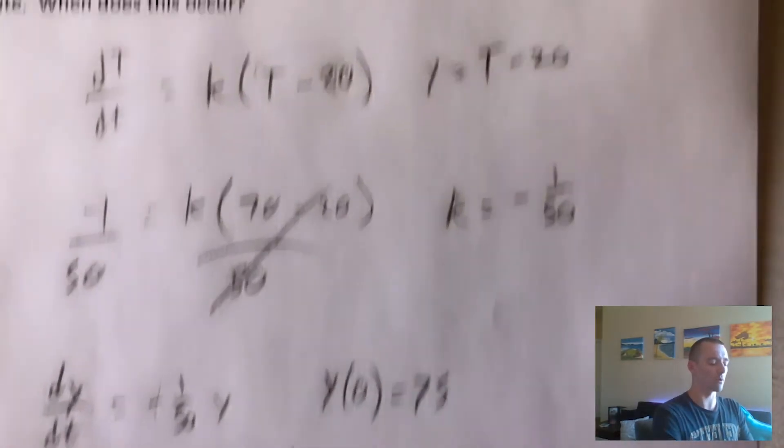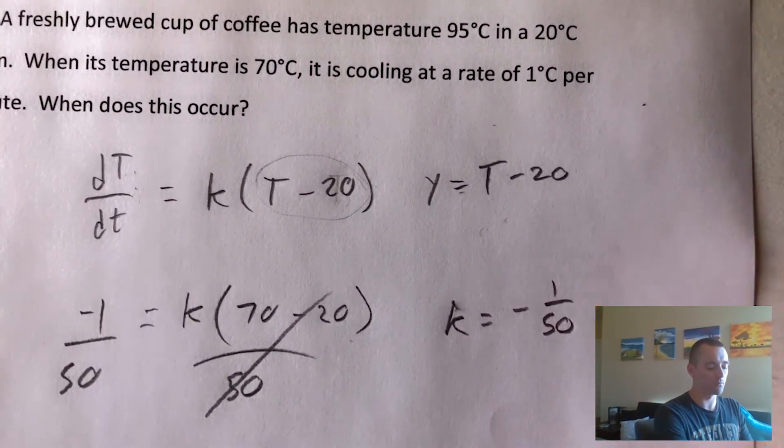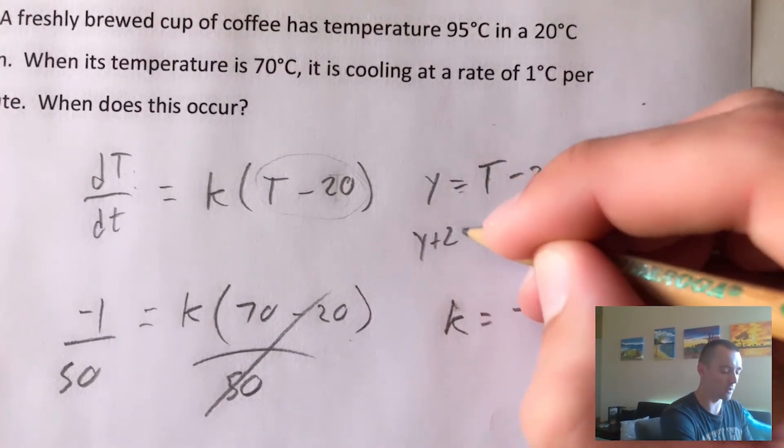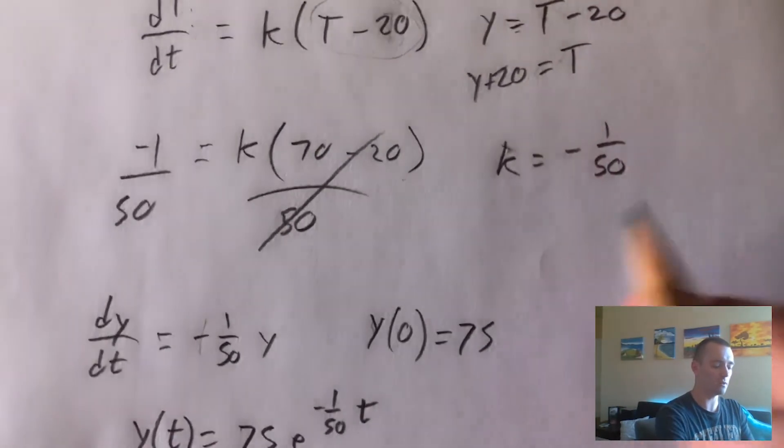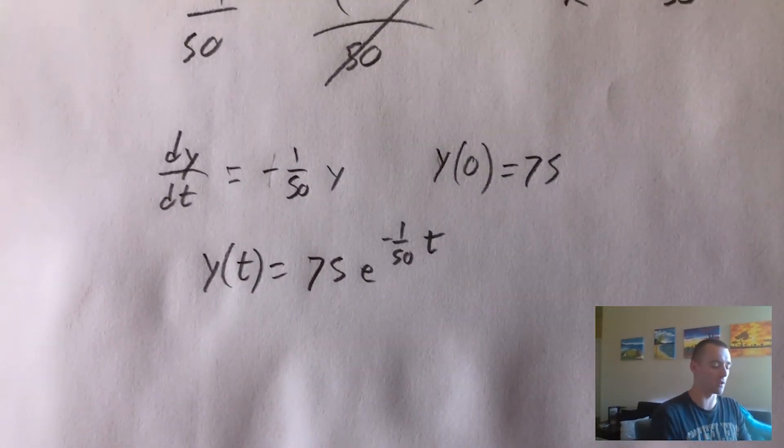So remember, Y is just the temperature minus 20. Well, conversely, what that tells us is the temperature is just Y plus 20. So if we add 20 to whatever our Y value is at some given time, that should give us the temperature at that given time.